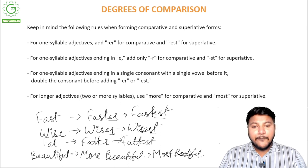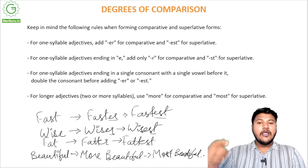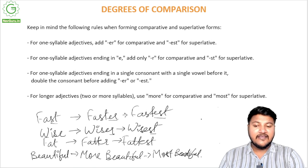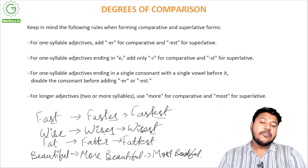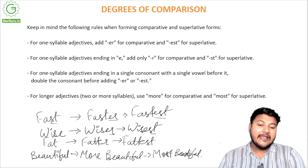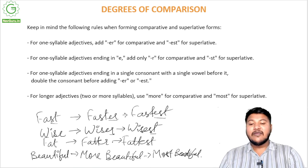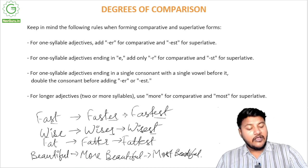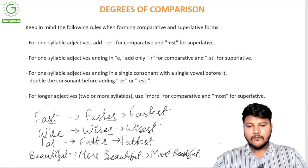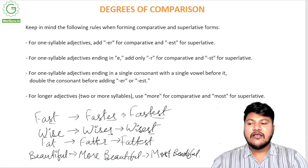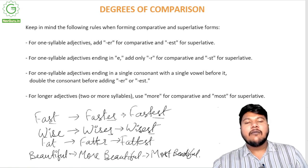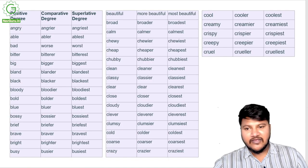To summarize the rules: if it's a simple one-syllable word without a final vowel, add '-er' and '-est.' If it ends in 'e,' use '-r' and '-st.' If it's a one-syllable word ending in a consonant with a single vowel before it, double the consonant and add '-er' and '-est.' If it's a two-or-more syllable word, use 'more' and 'most.' Now let's go through a list of positive, comparative, and superlative degrees.